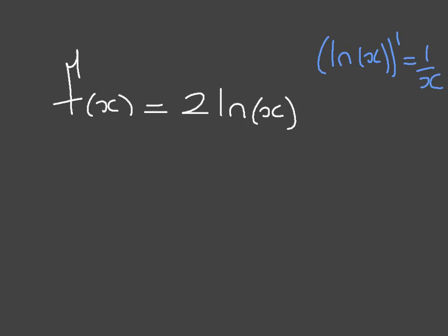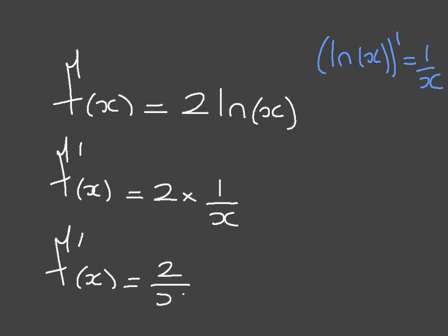we can see that f dash of x, the derivative, is going to be equal to 2 times the derivative of ln of x, so that's 2 times 1 over x. And we can multiply both numerators together here, and say that f dash of x is equal to 2 over x. And that's it. We've differentiated this function as well.